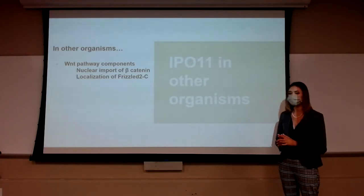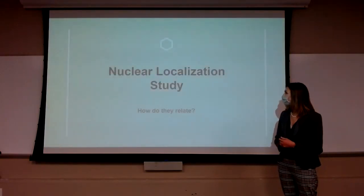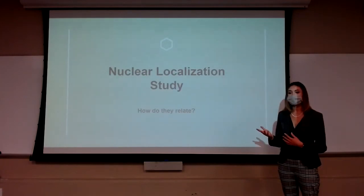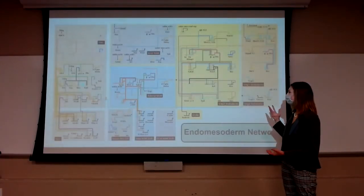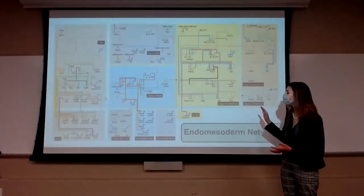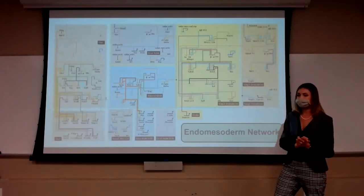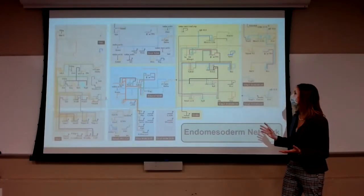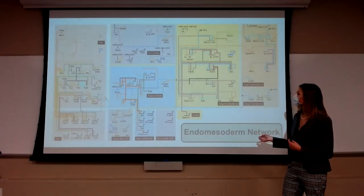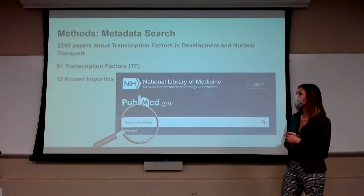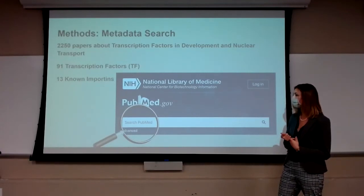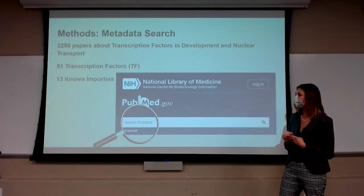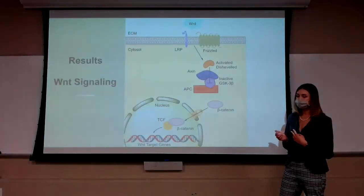Now for the nuclear localization signal study — looking at how these importins relate to the transcription factors we're interested in. We pulled all the different transcription factors from the gene regulatory networks and made a list. I performed a metadata search of about 2,000 papers, looking for associations among the 91 transcription factors involved in this developmental process and the 13 known importins in sea urchin. From that, we found about 25 associations.